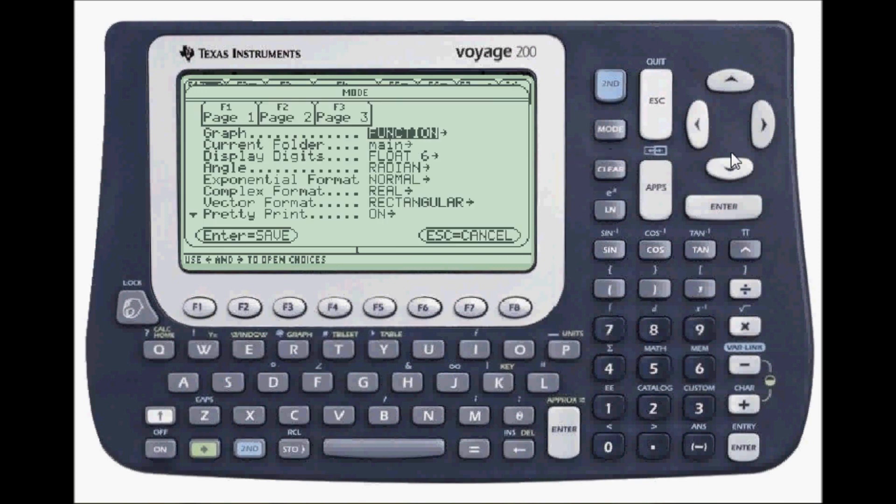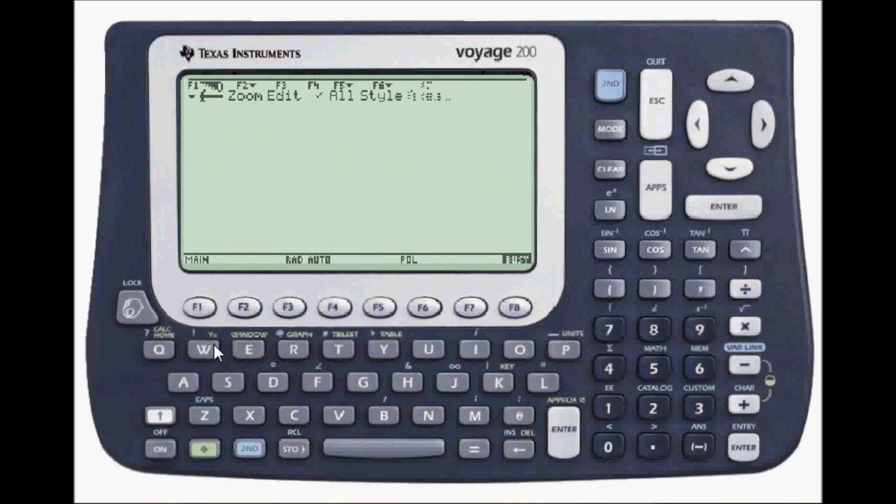Now I'm going to go to mode. I'm going to switch out of function. Switch over to polar. Press enter. Go to y equals, now you'll see it's now r of theta so here's a function to plot cosine of 8 theta, theta's right here over the back button. Close parenthesis, enter, green diamond key and r in graph.